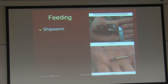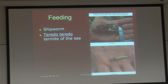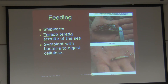This is the shipworm — right here. If you're wondering where the shell is, this is the shell — very small, reduced. They call it shipworm because they attach to ships made of wood, but nowadays ships are made of fiberglass, so we don't have much problem with them anymore. The scientific name is Teredo, and the common name is 'Termite of the Sea.' They are symbiotic with bacteria to digest cellulose — bacteria have the enzyme cellulase.